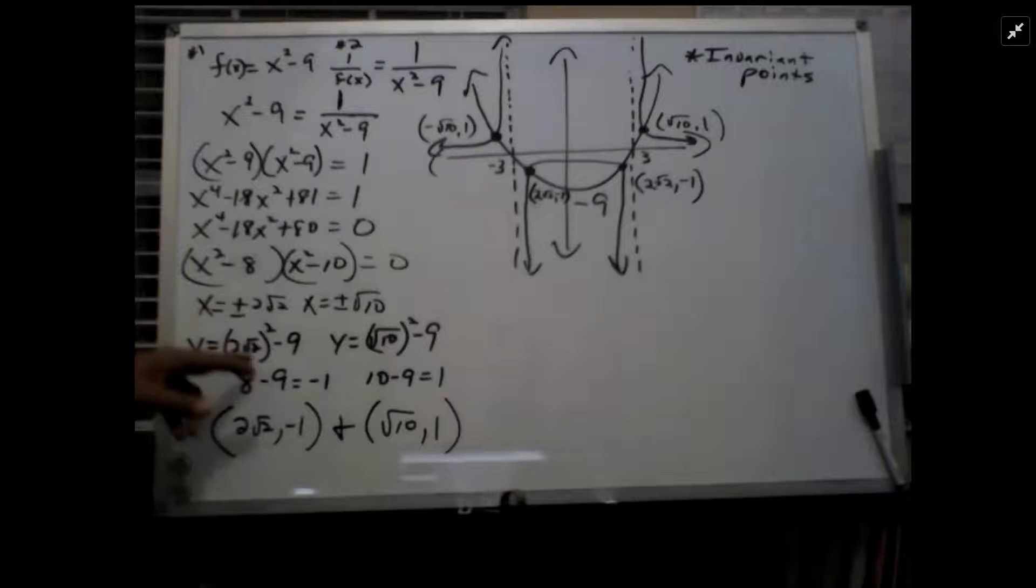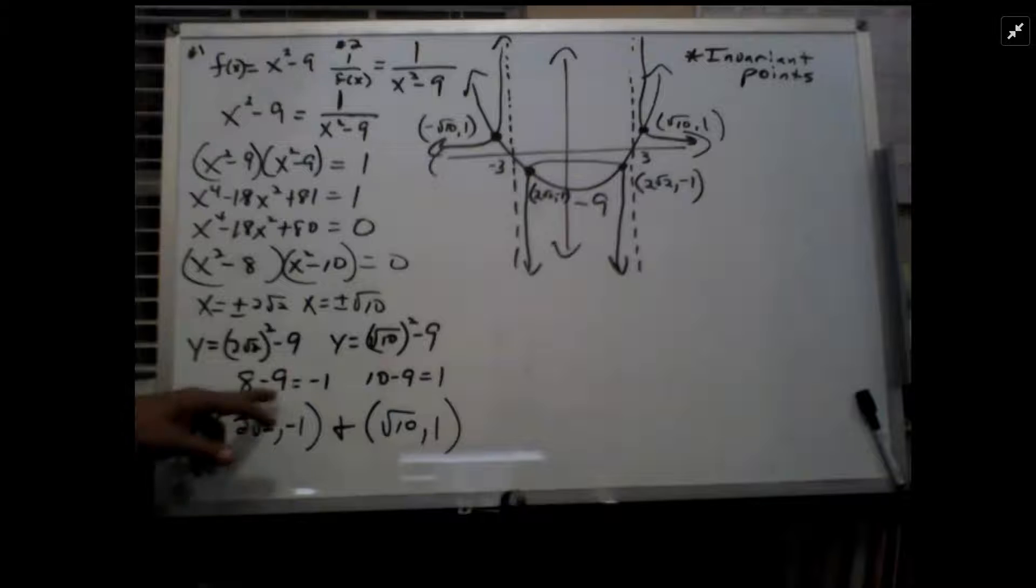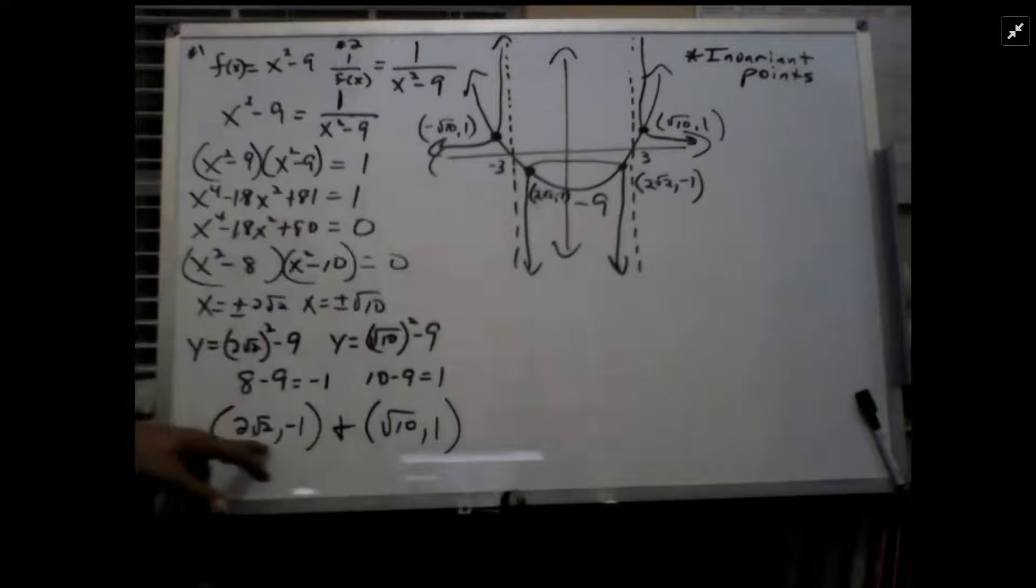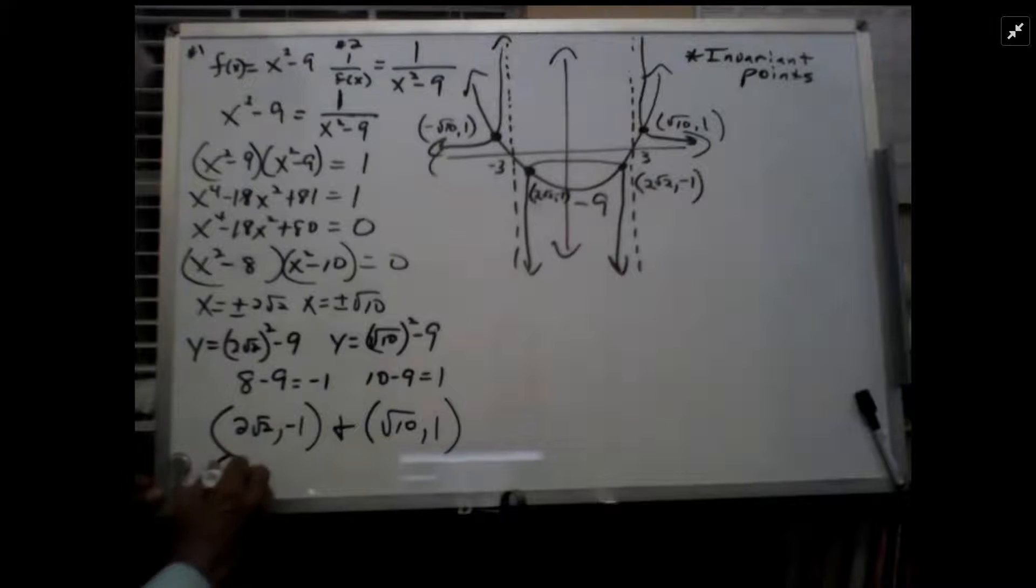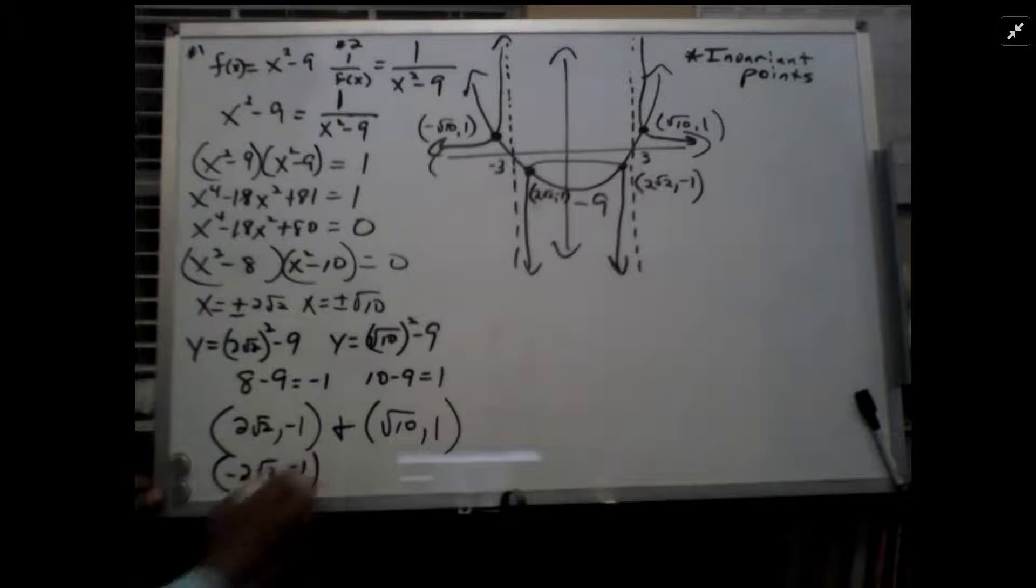So plug the 2 radical 2 into the x squared minus 9. It gives me 2 radical 2 squared minus 9, which is 8 minus 9 is negative 1. So one of my points is 2 radical 2, negative 1, and negative 2 radical 2, negative 1.